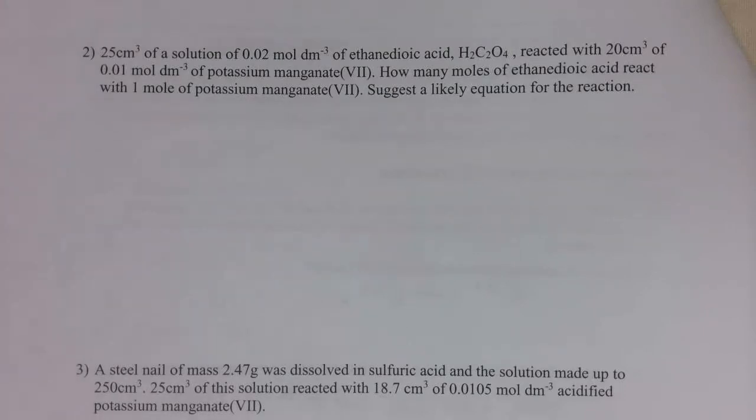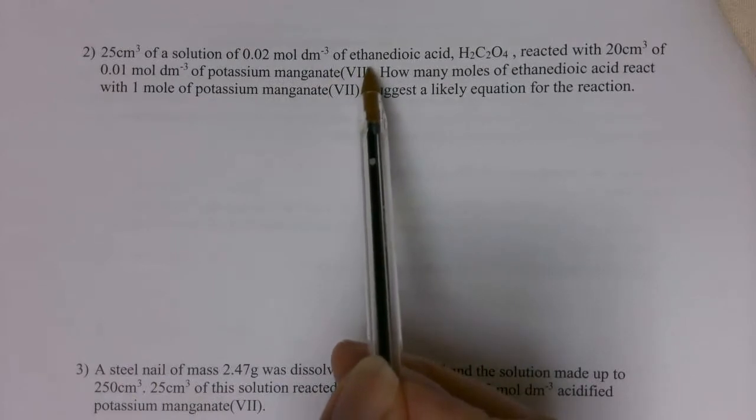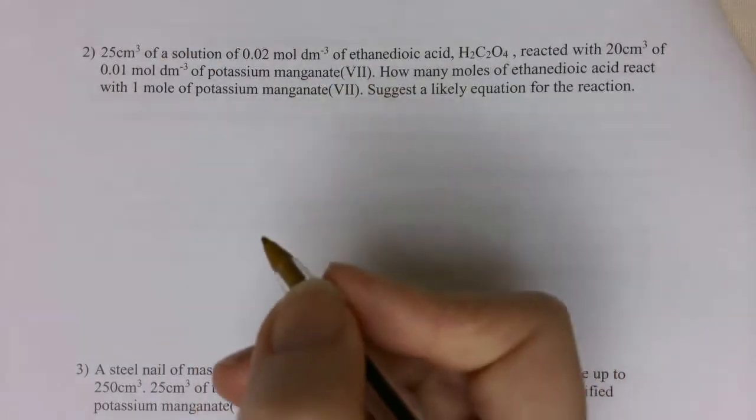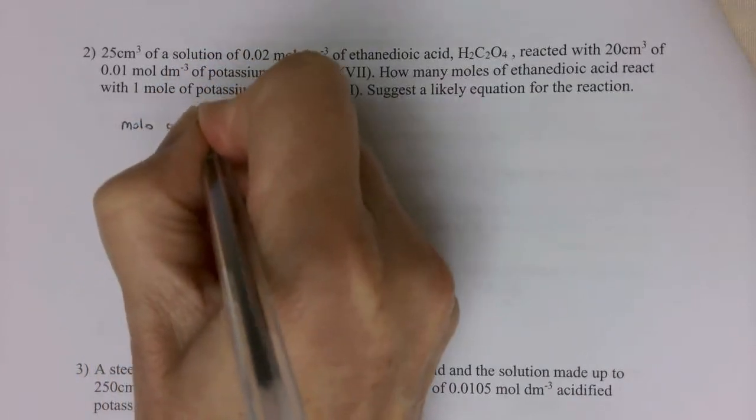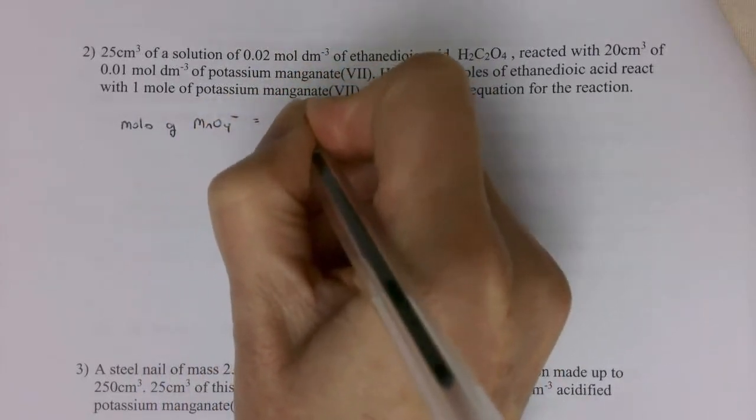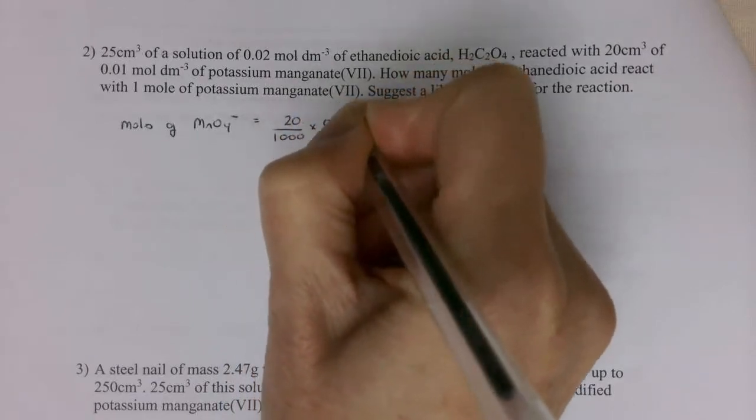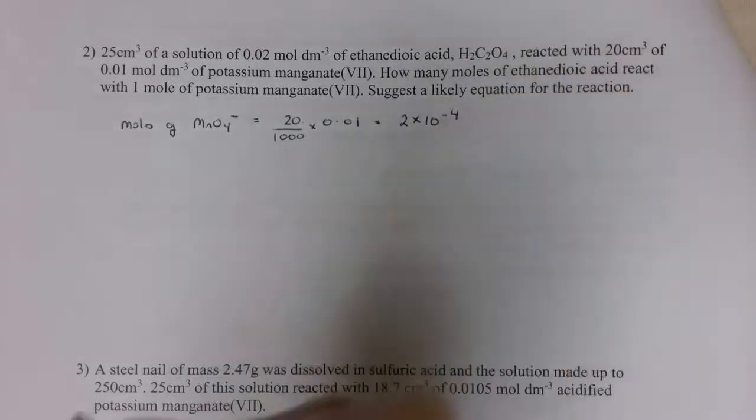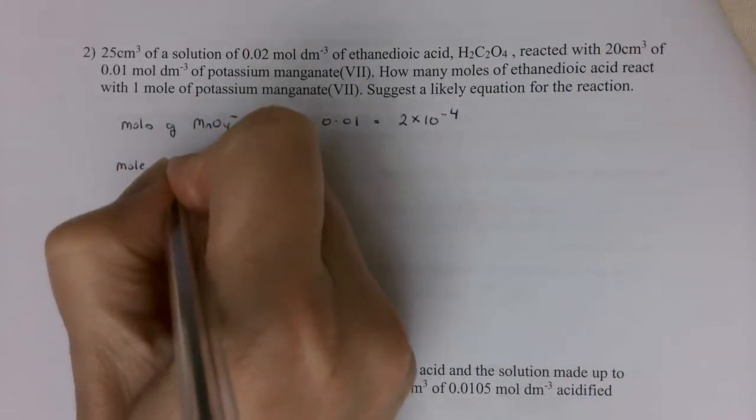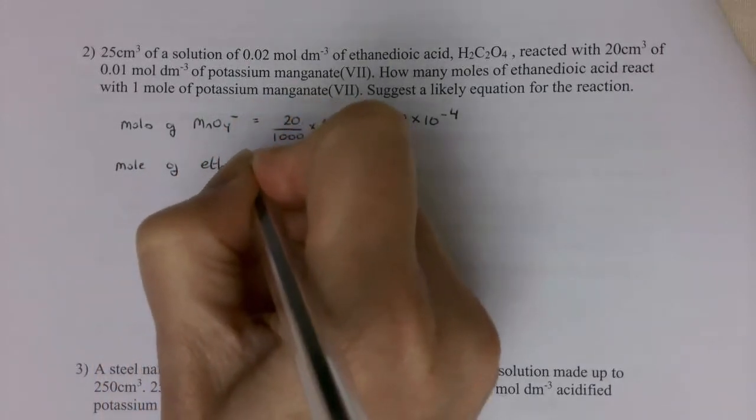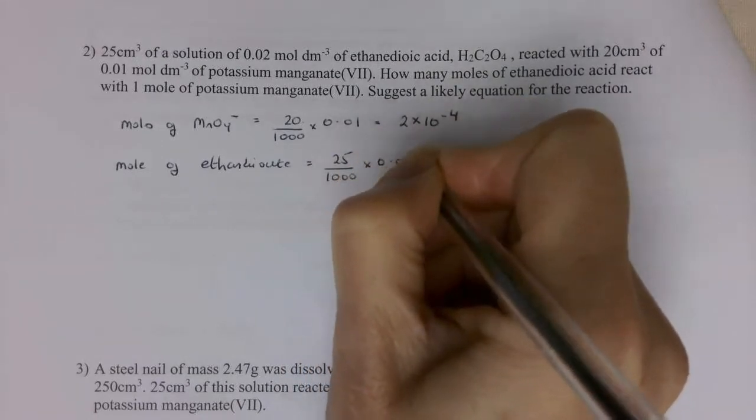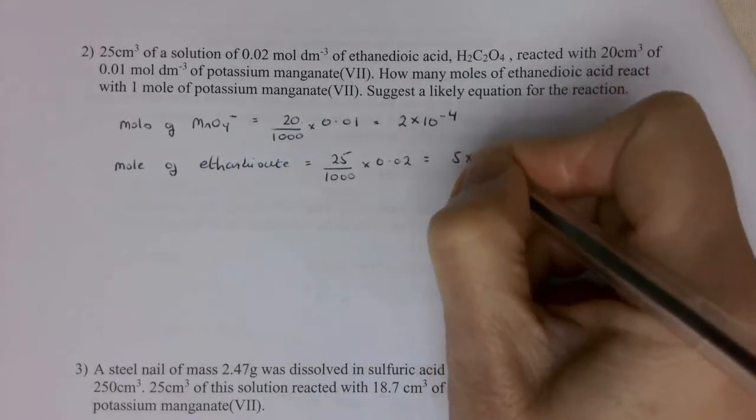So on the next page is another couple of examples of these types of calculations. The first one does have a tendency to catch students out. So you've got a solution of ethanedioic acid, and you've got a solution of potassium manganate. So we're going to work out the number of moles of these. So we know in terms of moles of manganate, MnO4-, we have volume, 20 over 1,000 times 0.01. So that becomes 2 times 10 to the minus 4. And the moles of ethanedioate is volume, this time 25, over 1,000 times 0.02.